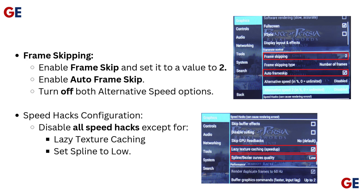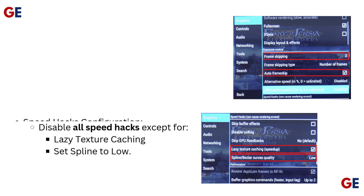Speed hacks configuration: disable all speed hacks except 4. Set lazy texture caching and spline to low.